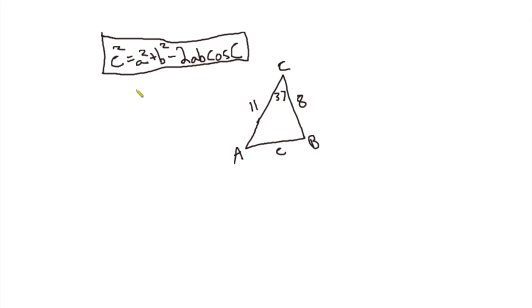And another way, another helpful way to think about law of cosines, it's basically the Pythagorean theorem but the Pythagorean theorem is just for right triangles. The law of cosines, it's like the Pythagorean theorem. You see it looks very similar, but you can use it on any triangle.